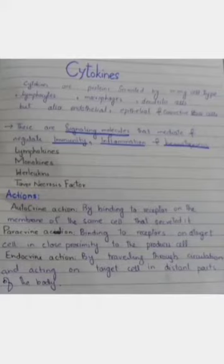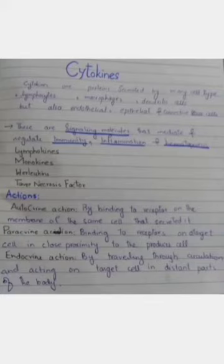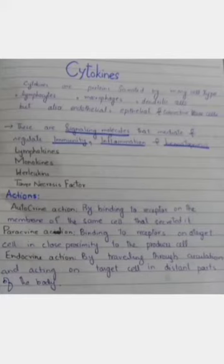Paracrine action involves binding to the receptors on the target cell in close proximity to the producer cell. The cytokines produced bind to target cells via specific receptors nearby. Endocrine action involves travelling through circulation and acting on the target cells in a distant part of the body. The cytokines go into circulation and bind specific receptors on target cells at a distance.